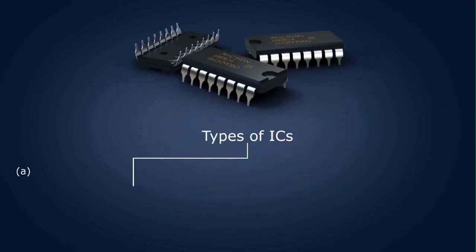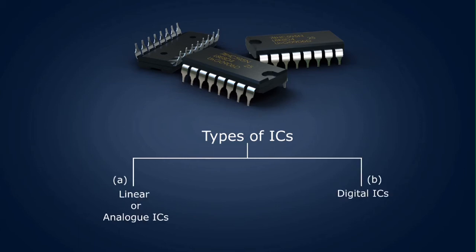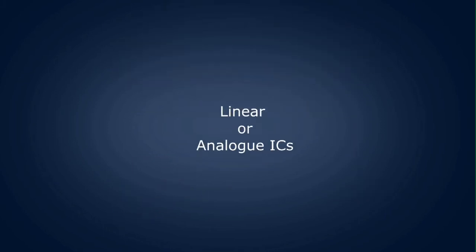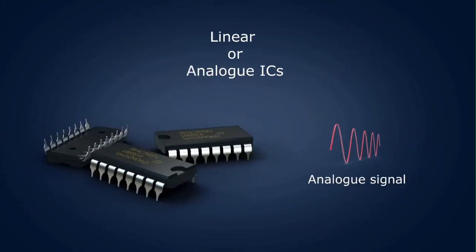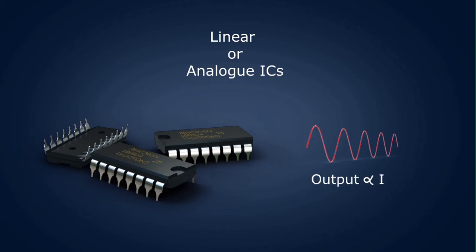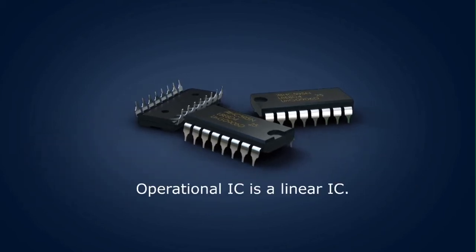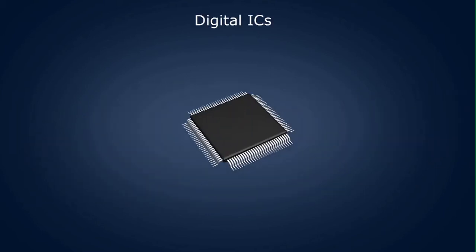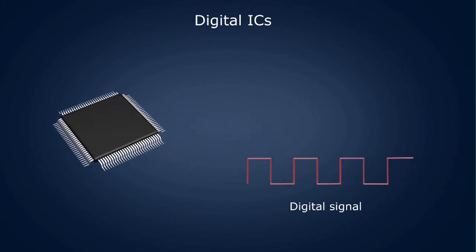ICs can be grouped into two categories depending on the nature of input signals: (a) linear or analog ICs, and (b) digital ICs. In linear ICs, the input signals are analog signals which change smoothly and continuously over a range of values between a maximum and a minimum. The output is almost directly proportional to the input — that is, it varies linearly with the input. An operational amplifier is an example of a linear IC.